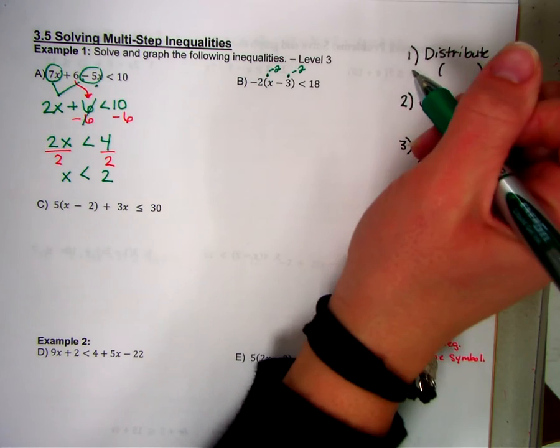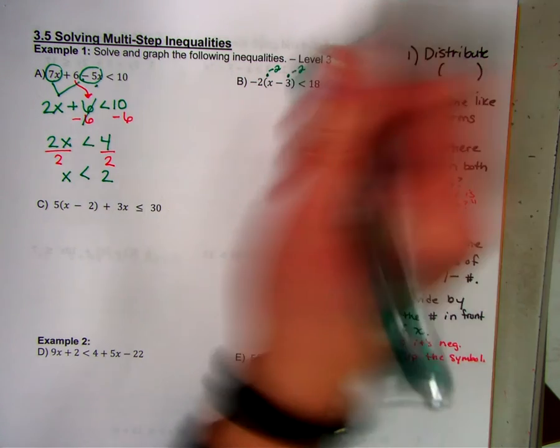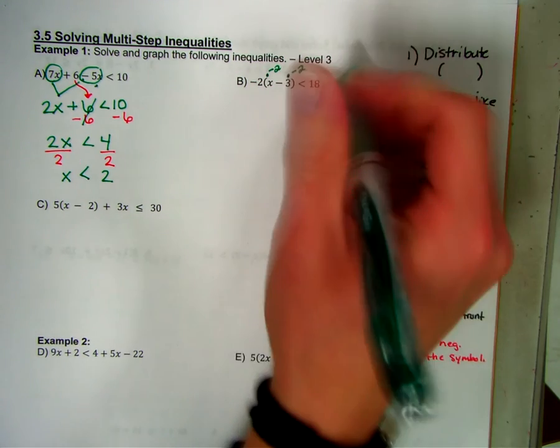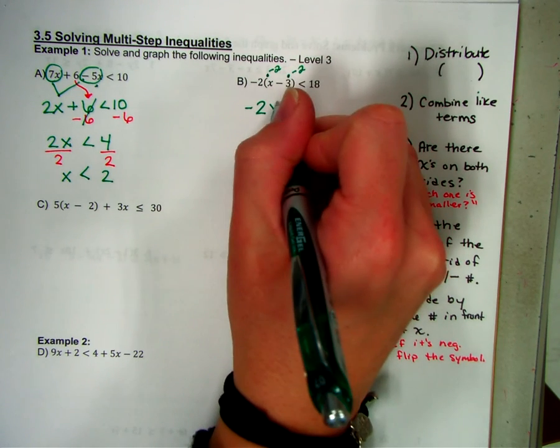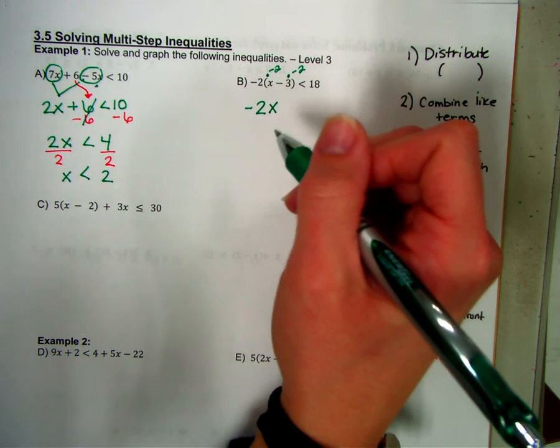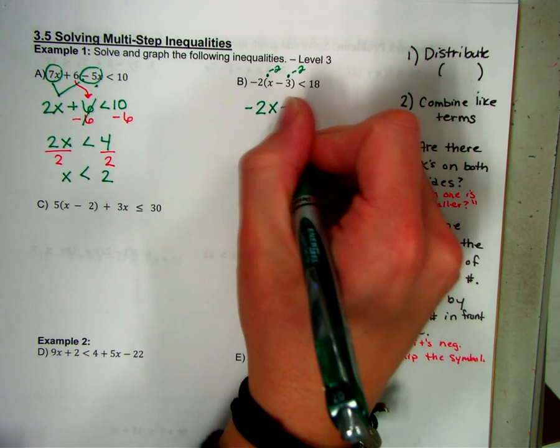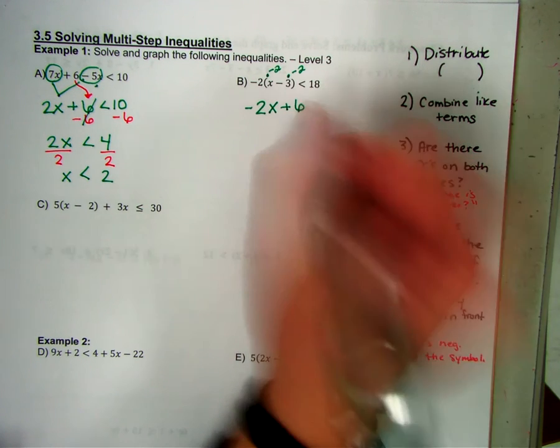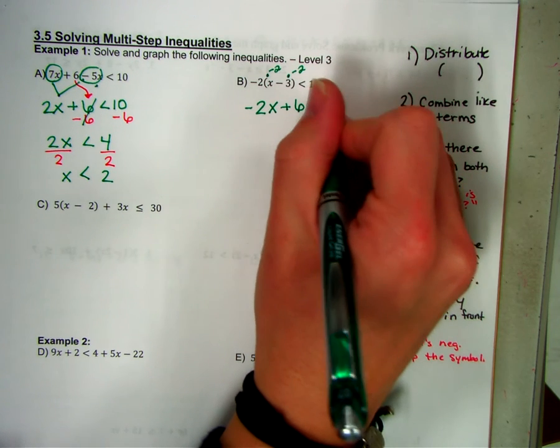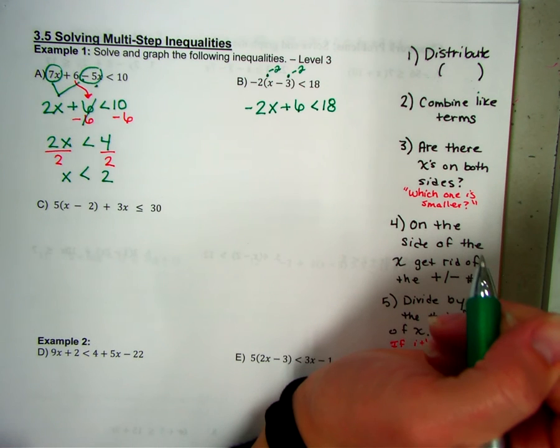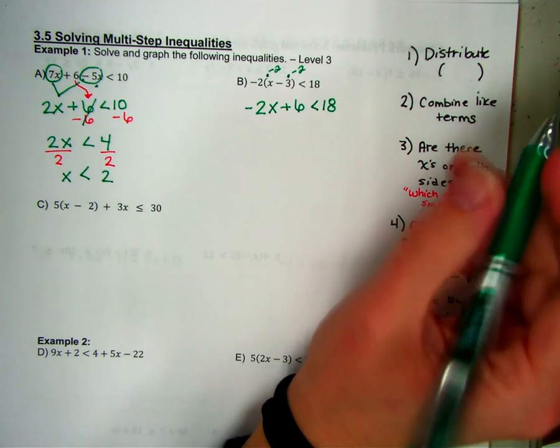So I'm going to multiply by negative 2. Multiply by negative 2. Okay. Some of you like to do that. Some of you like to do the little arrows. So x times negative 2 is negative 2x. And here's the part where you're going to need to know on your final. Okay. Negative 3 times negative 2 is a positive 6. Less than 18.